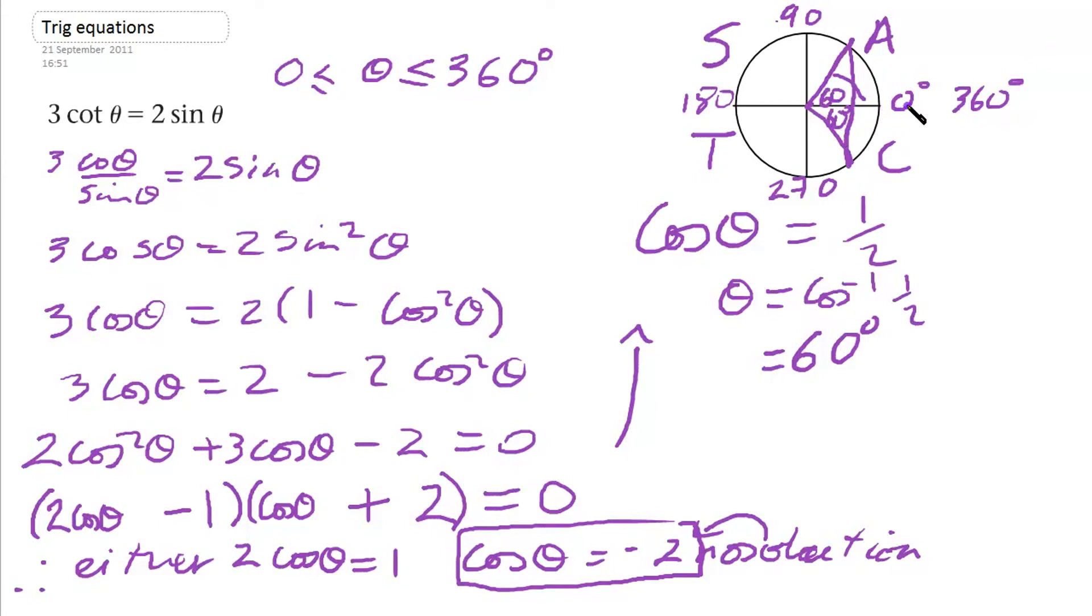Now there's 0 and 360. If we're going backwards from 360, 60 off that will give us 300 here. So our next angle is 300.